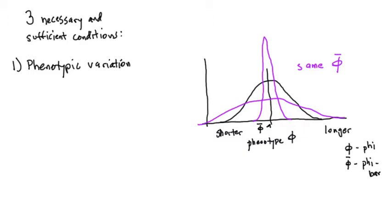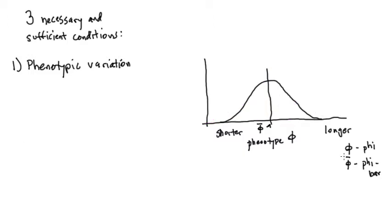To quantify the variation we use the standard deviation, represented by the lowercase Greek letter sigma, which is about two-thirds of the distance between the mean and one extreme value. A wider, flatter curve would have a larger standard deviation, while a taller, narrower curve would have a smaller value for sigma. At this point we have accounted for the first condition: phenotypic variation.